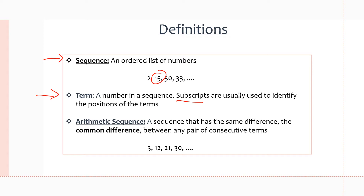And then we have arithmetic sequence, which is just a sequence but between any pair of consecutive terms there is a common difference. Up here we didn't really have a pattern to the sequence, but if we look at the example of 3, 12, 21, and 30, which is an arithmetic sequence, each two consecutive terms have a common difference of 9. To get from 3 to 12, you add 9. To get from 12 to 21, you add 9. To get from 21 to 30, you add 9.